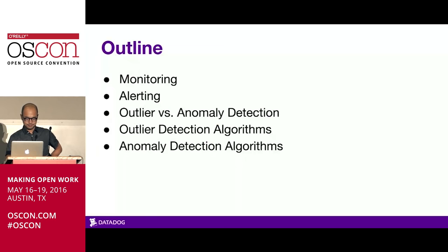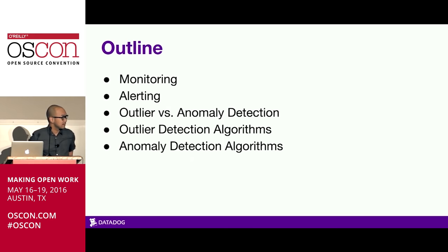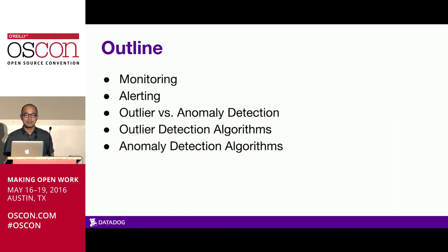I'm going to be talking about how we use outlier and anomaly detection at Datadog to monitor our systems in real time. To motivate the problem, I'm going to first go over monitoring and alerting, then make the distinction between what we call outliers and anomalies, and then we'll get to the meat of the talk — the algorithms we use for outlier and anomaly detection.